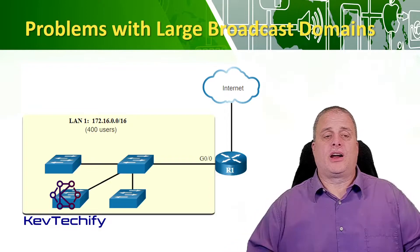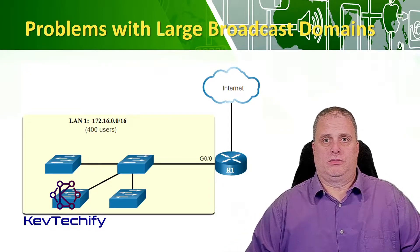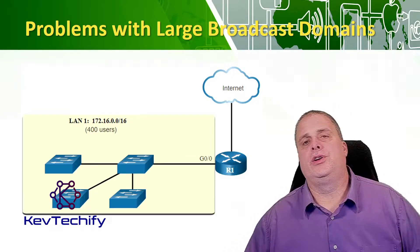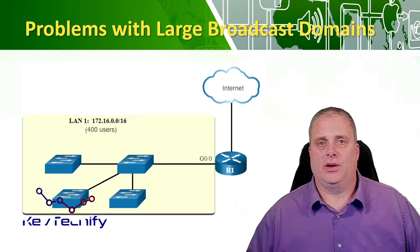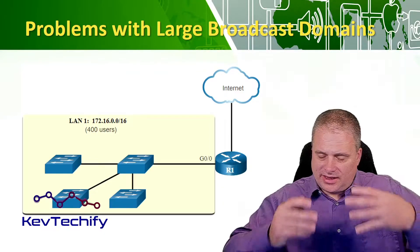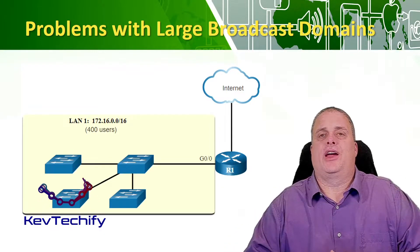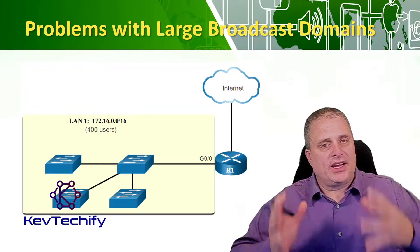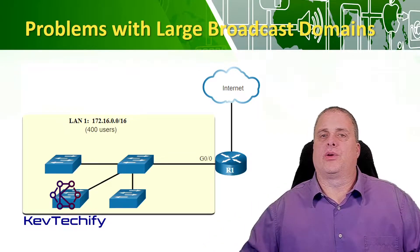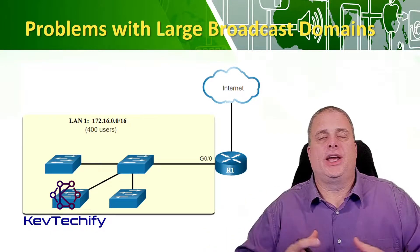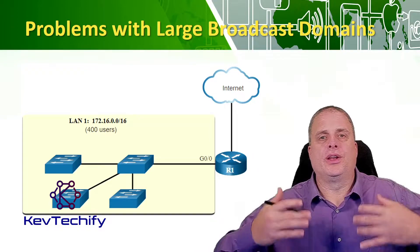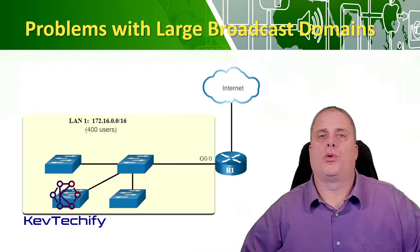If you have a large network — in this example, there are 400 users on the network — there are going to be a lot of broadcasts. That's a lot of extra traffic, and all that extra traffic is going to slow down your network. The throughput of good data on your network starts going down with more broadcasts.